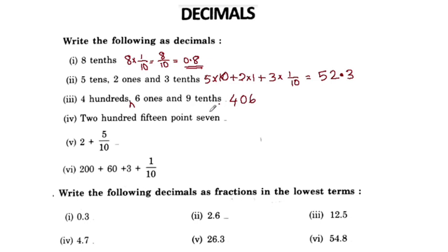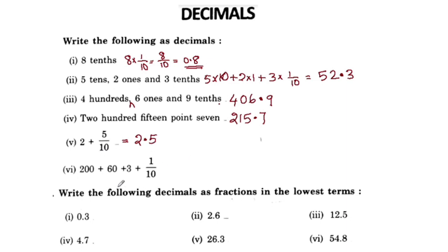9 tenths. 15 tenths. 215.7. Next, 2 plus 5 by 10 is 0.5. Then 200 plus 60 plus 3 is 263. And 1 by 10 is 0.1.